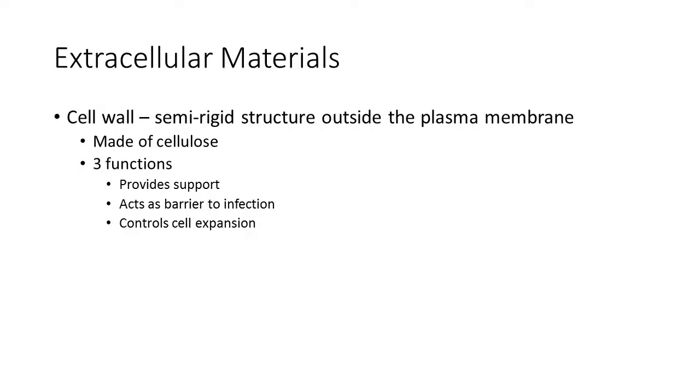All right, today we're going to be going over cellular junctions and things that are outside of the cell. You guys should have gone over what's inside the cell when you're going through chapter 4, going over organelles and how things work on the inside. Now let's talk a little bit about how cells connect to each other and the space in between those two different cells.